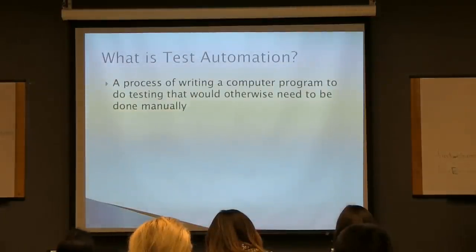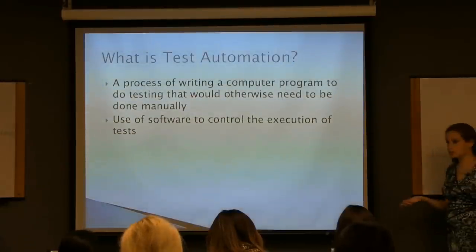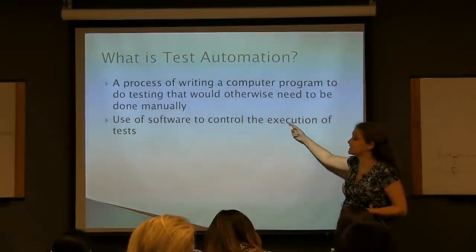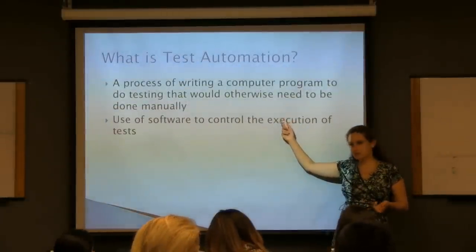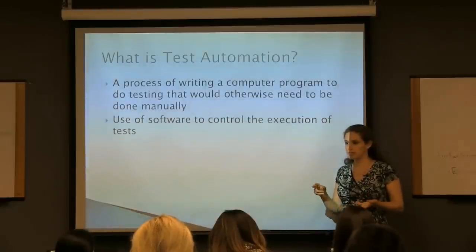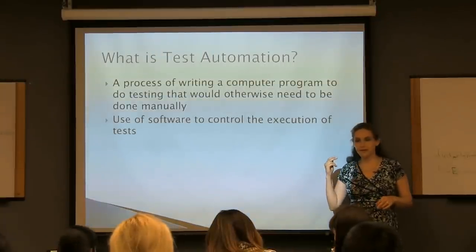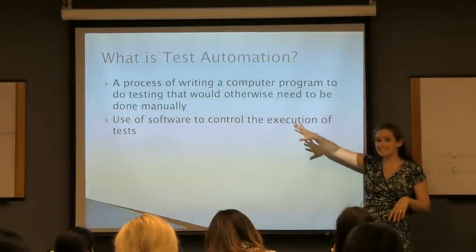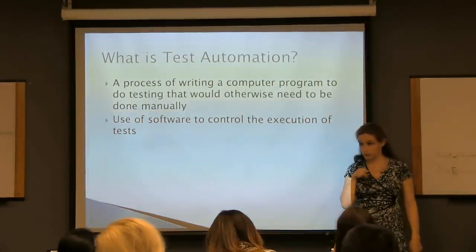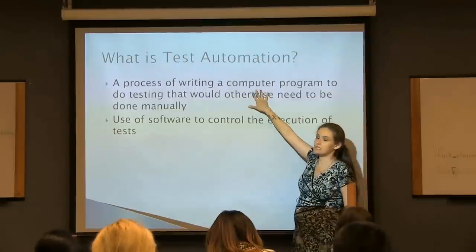It's a process of writing a computer program to do testing that would otherwise need to be done by you. And it's also a process of executing those tests based on certain conditions. In advanced class, we're going to talk about CI. CI stands for continuous integration, and it's basically an umbrella used to describe tools like Bamboo, Jenkins, CircleCI - there's at least six other ones. There are systems that will run your tests for you without you having to say go and click that button. That's part of automation, but we're going to be covering this part.